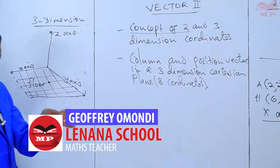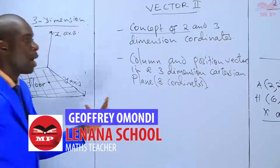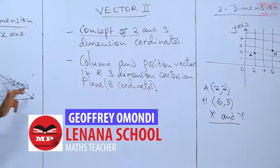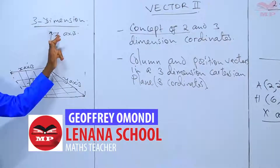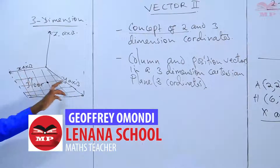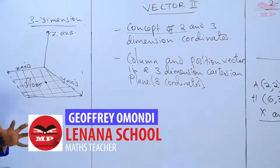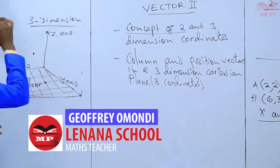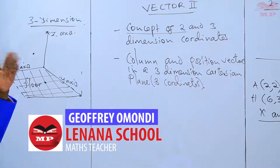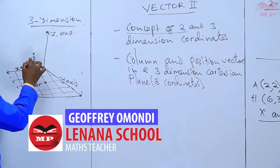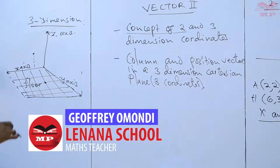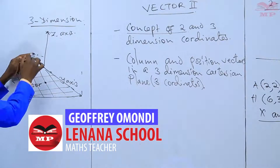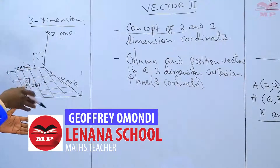In a three-dimensional Cartesian plane, instead of having only x- and y-axis, we end up having x-axis, y-axis, and also the z-axis. Should you pick any point above the floor, that point can have reference to one side of the wall, reference to the other side of the wall, and also reference to the line joining the wall to the floor.